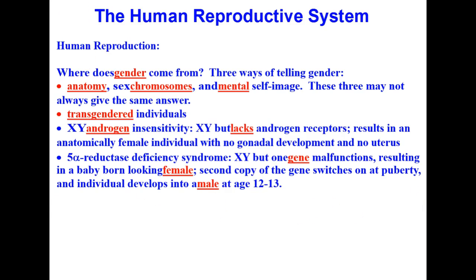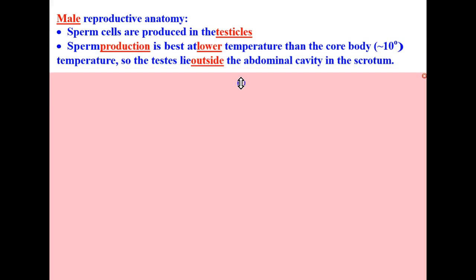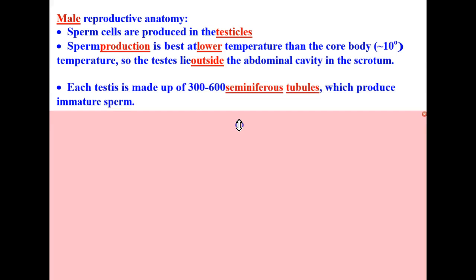Next, let's discuss the male reproductive anatomy. Male reproductive cells, of course, are the sperm cells that are produced in the testicles. Sperm production is best at lower temperatures than the core body temperature by about 10 degrees Fahrenheit. So the testes lie outside the abdominal cavity in the scrotum to keep them cooler and therefore produce sperm better. Each testis is made up of 300 to 600 seminiferous tubules, which produce immature sperm.